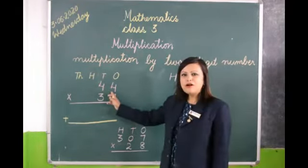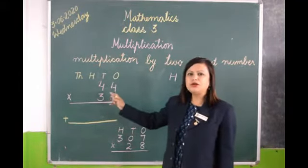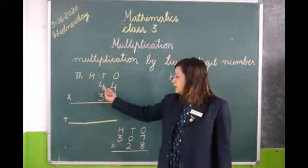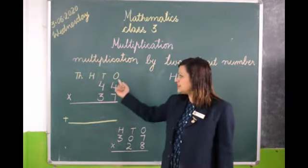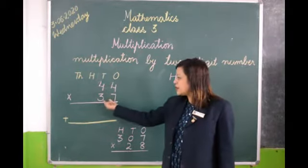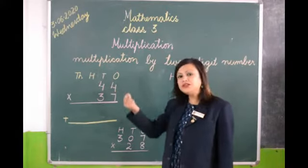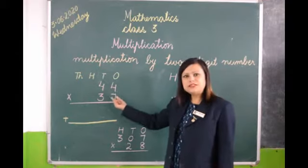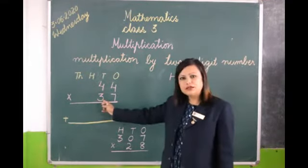See, 44 into 37. Last week we were doing with a single digit, isn't it? So today we are going to learn with double digit. Whenever you do your step, you start from one stage. Please don't get confused when you see double digit. You cannot directly do with 37. Here we start with the first digit, that is 7. First we will do with 7, we will multiply with 7. Then next we will multiply with 3.